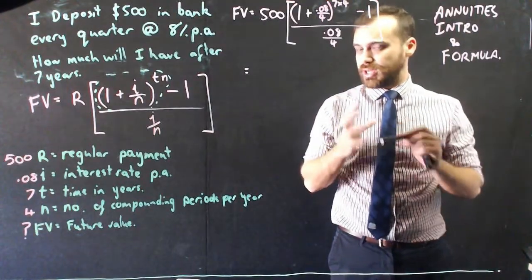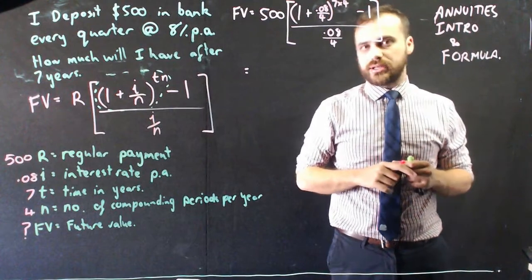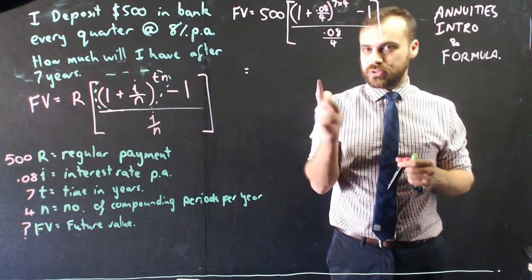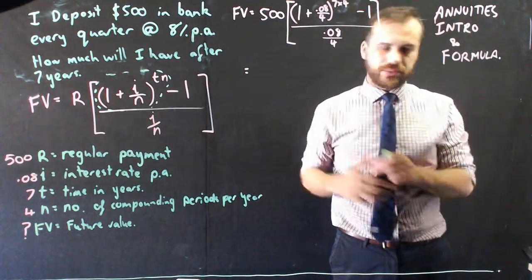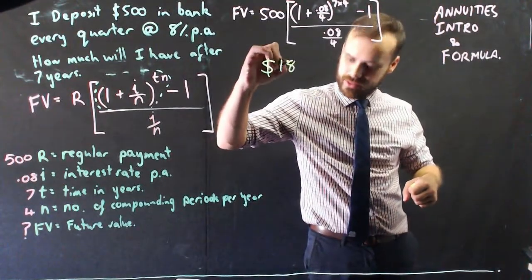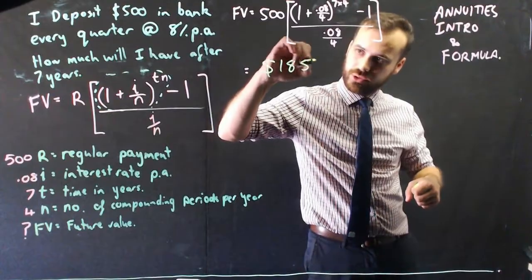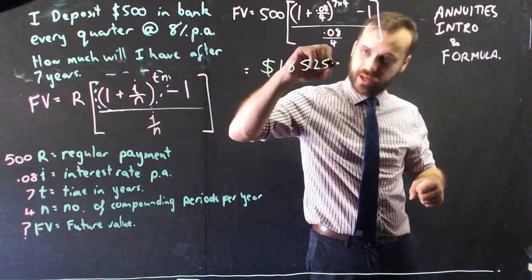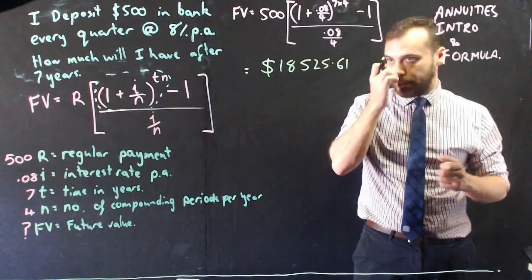That's really ugly. So I'm going to put that in my calculator right now. I suggest you pause it and do the same, and make sure your answer matches my answer. So the answer I get is $18,525.61 if I round up.